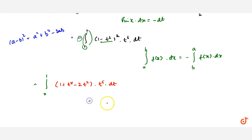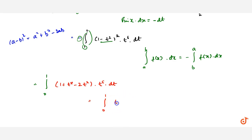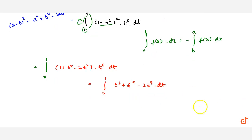The integral from 0 to 1 becomes: t raised to power 6 minus 2t raised to power 8 plus t raised to power 10 dt.